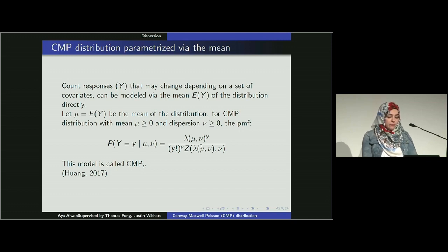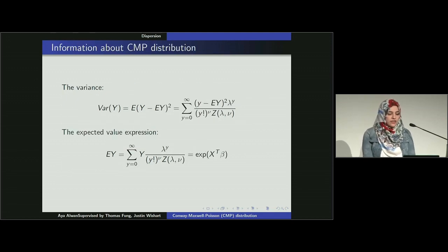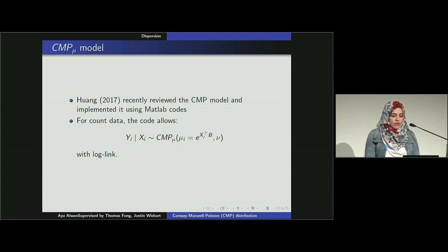Then Alan Wong came and found this great distribution is unable to directly model the mean of count. This issue makes it unable to be compatible or comparable with any other distributions like negative binomial or generalized Poisson. So what did he try? Alan Wong tried to directly model the mean using MATLAB. As you can see here, the probability mass function is here. He called that Conway-Maxwell-Poisson-mu which can model the mean of count. This is the variance for that. As you can see, the expected value expression is here.